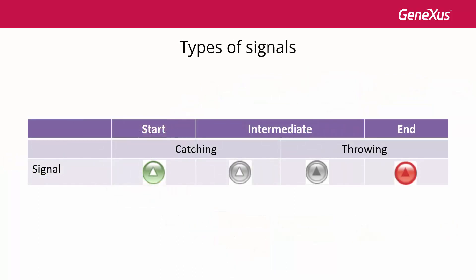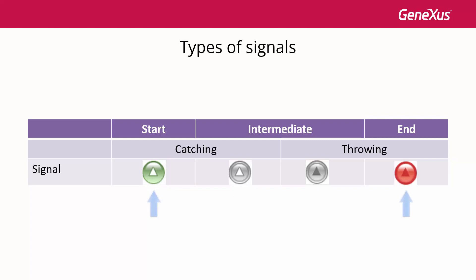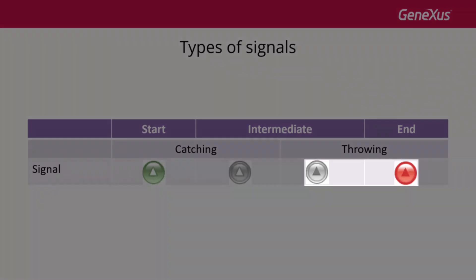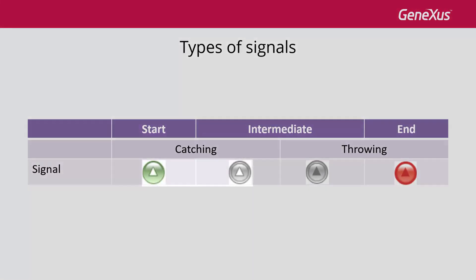The signal behavior varies depending on whether they're start events, intermediate events, or end events. In turn, these events can trigger a signal (throwing) or receive a signal (catching). The notation used changes accordingly. For example, intermediate events have a double border while start and end events have a simple border. When they're triggering events the triangle is dark, and when a signal is captured the triangle is clear.